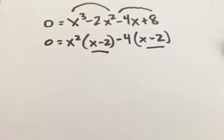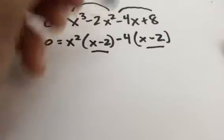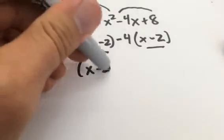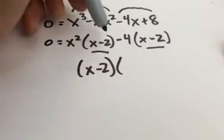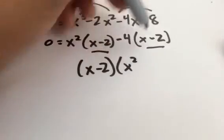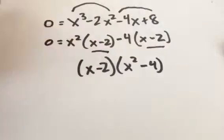And again, notice both those have an x minus 2 in it. So I can factor that out. I'm left with this: x minus 2. And if I factor that out, that leaves me an x squared. If I factor that out, that leaves me a negative 4.